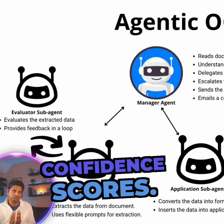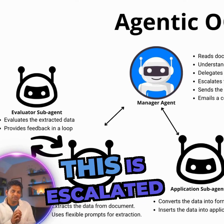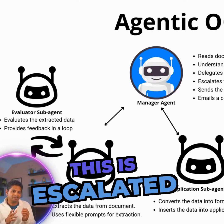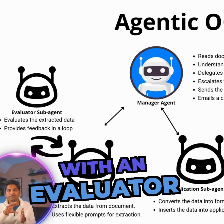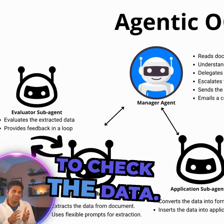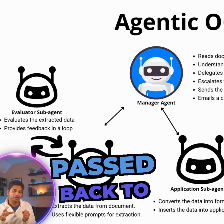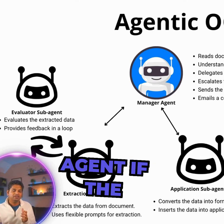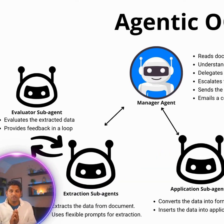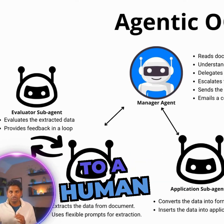If the confidence scores are low, this is escalated or checked with an evaluator agent, which uses another AI model to check the data. Only when both models agree is it passed back to the manager agent. If these two agents cannot agree on the data extraction, then it's escalated to a human.